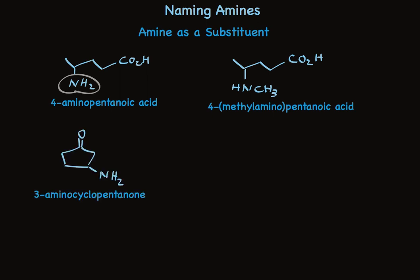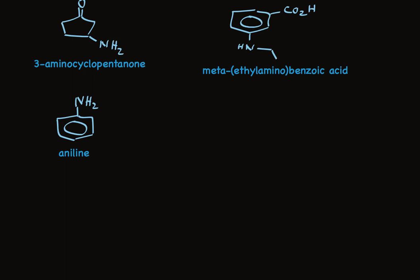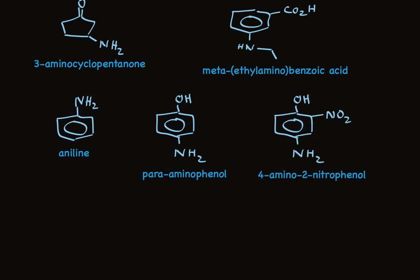Ketones are a higher priority than amino groups, so this is 3-aminocyclopentanone. The ketone functionality in a ring is always carbon 1, so we don't have to use that number. For aromatic compounds like benzoic acid, this would be the ethylamino group attached at the meta position: meta-ethylaminobenzoic acid. When the amino group is on an aromatic ring with no higher priority group, we call it aniline, but as soon as there's a higher priority functional group, the amino group becomes a substituent. This is para-aminophenol.